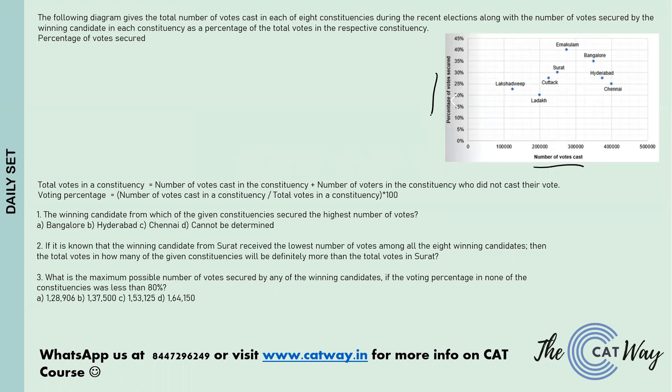The first question asks: the winning candidate from which constituency secured the highest number of votes? We have been given the percentage each winning candidate got in their constituency out of the total votes. Since the total number of votes are not known to us, we cannot find the exact number of votes secured. So the correct answer for question one is cannot be determined — option number four.